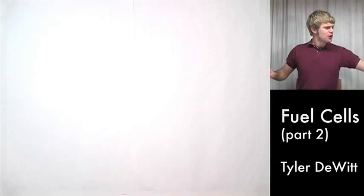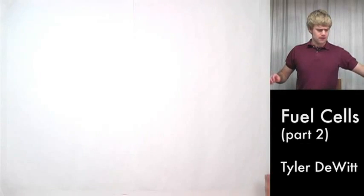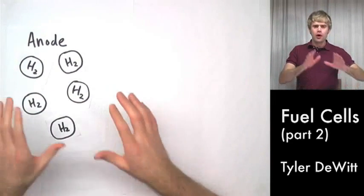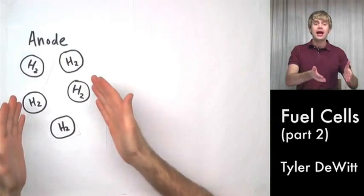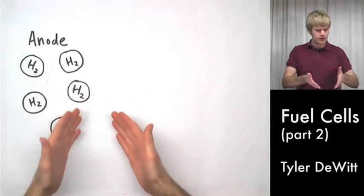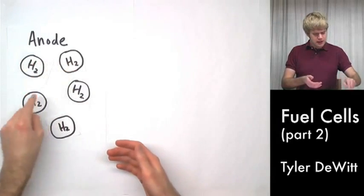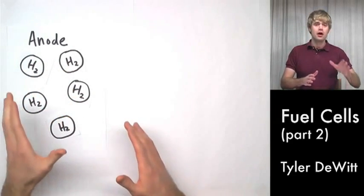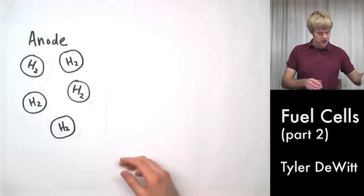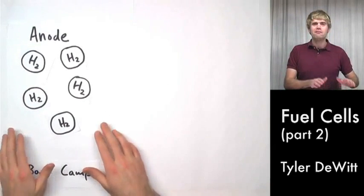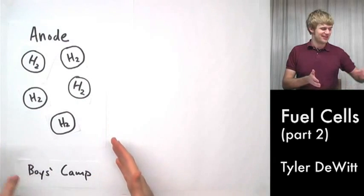Here's how. Parts of a fuel cell: if we could blow one up, magnify it very large, we'd see that on one side there's an anode. The anode is where the hydrogen gas lives. And each one of these circles here represent a molecule of hydrogen. So keeping with our analogy, we can consider the anode to be the boys camp of the fuel cell.